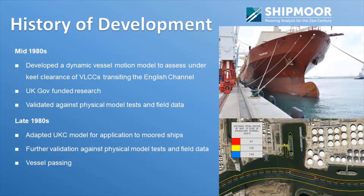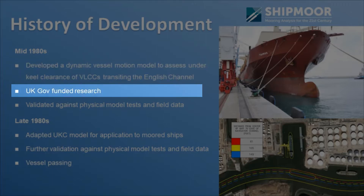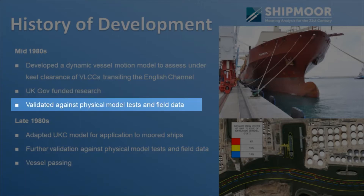Shipmore is based on a numerical modeling tool developed in the 1980s. It was originally developed as a dynamic motion analysis tool to look at under keel clearance of the brand new VLCC ships that had just started transiting the English Channel in the 1980s. It was UK government-funded research at the time and it was validated against a wide range of physical models, and also full-scale measurements where available.